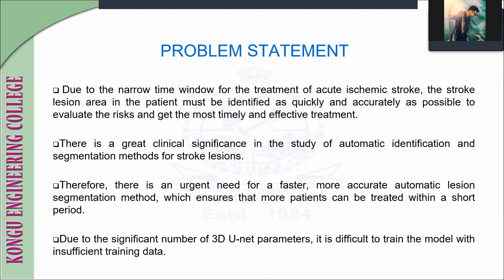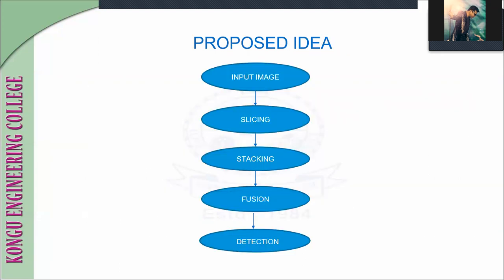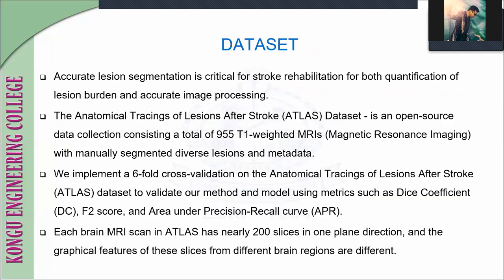The problem statement: the treatment of acute ischemic stroke must be predicted as soon as possible, and we must produce better treatment for patients. There is great clinical significance in the study of automatic identification. There is an urgent need for faster, more accurate automatic lesion segmentation methods, which ensures more patients can be treated within a short period. Due to the significant number of 3D U-Net parameters, it is difficult to train the model with insufficient training data.